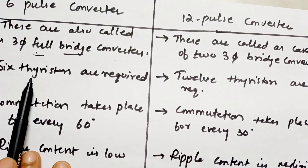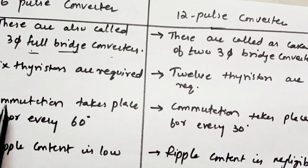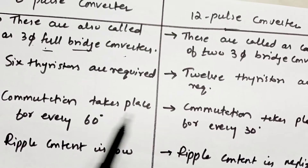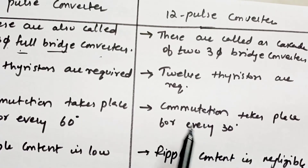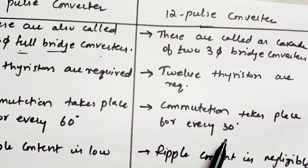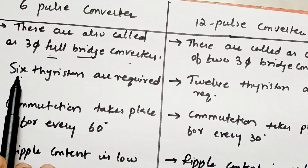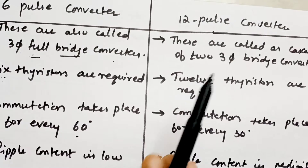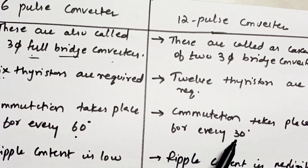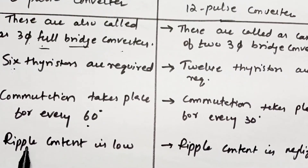In the 6-pulse converter, you use 6 thyristors, and in the 12-pulse converter, you use 12 thyristors. Commutation takes place every 60 degrees in the 6-pulse, and every 30 degrees in the 12-pulse. This makes sense mathematically: 6 × 60 = 360 degrees, and 12 × 30 = 360 degrees for a complete cycle.